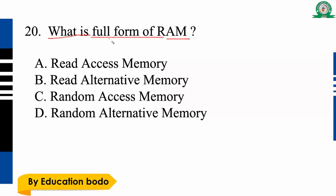Question number twenty: What is the full form of RAM? Option C is the right answer — Random Access Memory. RAM stands for Random Access Memory. Important question — option C is the right answer.